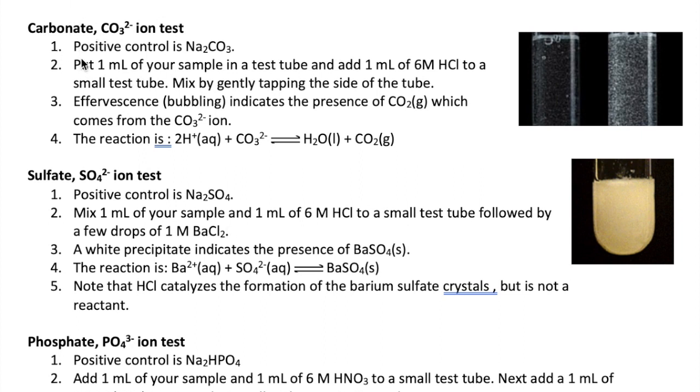Okay, the first test we're going to do is for the carbonate anion, and sodium carbonate is the positive control. Here you will mix one milliliter of your sample with one milliliter of HCl. You should start seeing small bubbles float to the top. This is carbon dioxide gas that's formed from the reaction between protons in your HCl and carbonate ion.